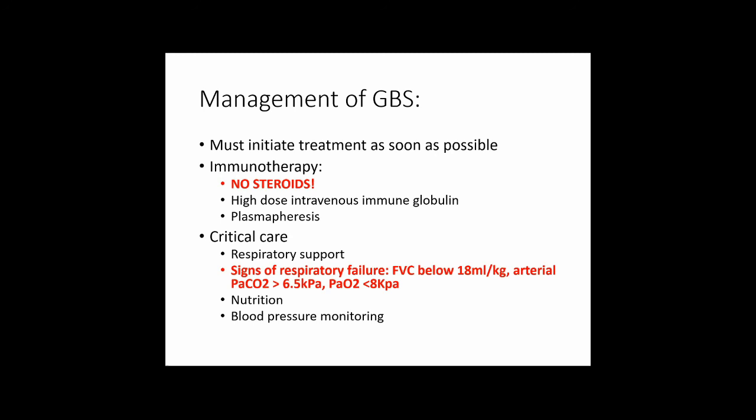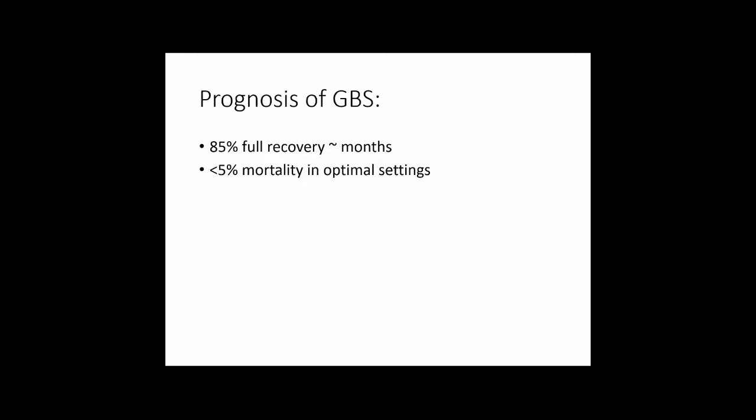Standard treatment for GBS is high-dose intravenous immunoglobulin (IVIG) and plasmapheresis. Signs of respiratory failure requiring intervention include a forced vital capacity below 18 mL/kg, arterial PaCO2 above 6.5 kPa, or PaO2 below 8 kPa. Eighty-five percent of patients achieve full recovery within a few months, and even with optimal management there is less than 5% mortality.